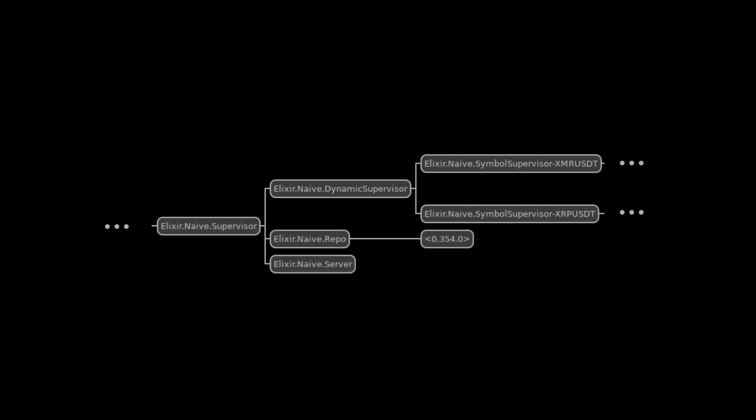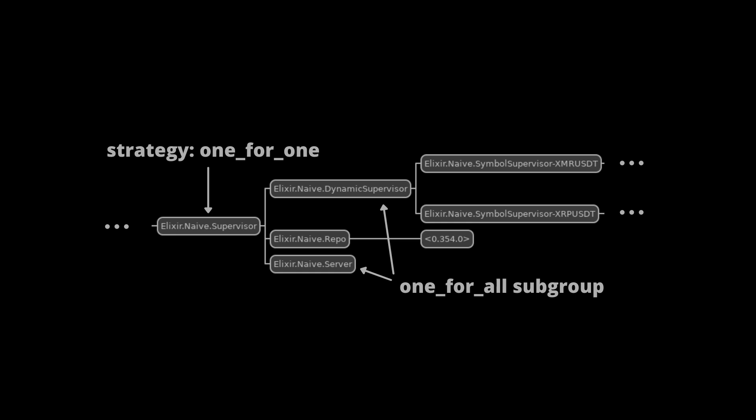As I was scratching my head about why the app isn't starting after adding auto trading, I realized that I made a mistake when we were designing the supervision tree for the naive application. Our naive application module starts a supervisor process registered under the name of naive supervisor with strategy one-for-one. This should be one-for-all, as whenever either server or dynamic supervisor dies it's easier to rebalance both of them. We also introduced an Ecto repo as a child, which causes even more complications since we want to rebalance neither server nor dynamic supervisor whenever the repo dies. This looks like we have a subgroup of two child processes that need one-for-all strategy and another process needing one-for-one. This is a clear indication that we need to introduce a new supervisor between the naive supervisor and those two related processes.